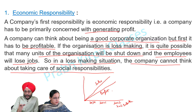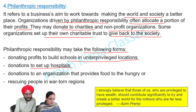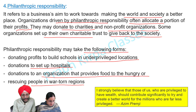4. Philanthropic Responsibility. It refers to a business's aim to work towards making the world and society a better place. Organizations driven by philanthropic responsibility often allocate a portion of their profits, donating to charities and non-profit organizations. Some organizations set up their own charitable trusts to give back to society. Philanthropic responsibility may take forms such as donating profits to build schools in underprivileged locations, donations to set up hospitals, or donations to organizations that provide food to the hungry or rescue people in war-torn regions.